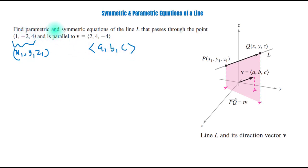So, parametric equation is x equals x1 plus at, y equals y1 plus bt, z equals z1 plus ct.